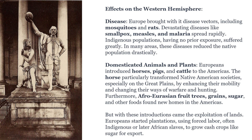Domesticated animals and plants. Europeans introduced horses, pigs, and cattle to the Americas. The horse particularly transformed Native American societies, especially on the Great Plains, by enhancing their mobility and changing their ways of warfare and hunting. Furthermore, Afro-Eurasian fruit trees, grains, sugar, and other foods found new homes in the Americas. But with these introductions came the exploitation of lands — Europeans started plantations, used forced labor, often indigenous or later African slaves, to grow cash crops like sugar for export.